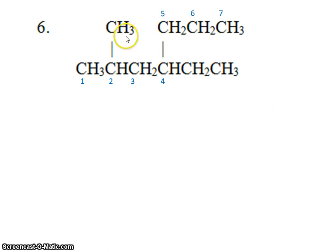You'll notice that off of the second carbon, we have a methyl group. And off of the fourth carbon, we have an ethyl group. Two carbons is ethyl.